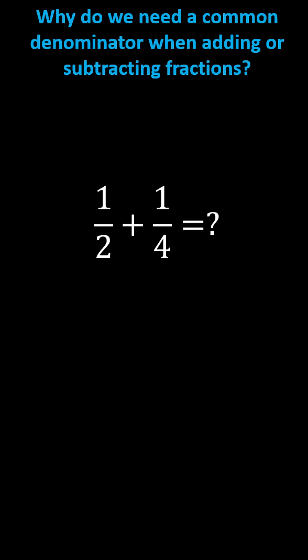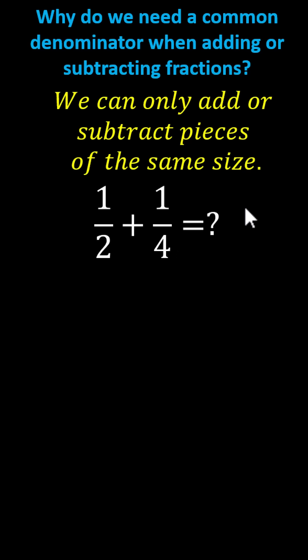Why do we need a common denominator when adding or subtracting fractions? For example, to find the sum of one-half and one-fourth, we must first determine a common denominator, hopefully the least common denominator. And the reason for this is the pieces must be the same size in order to add or subtract.